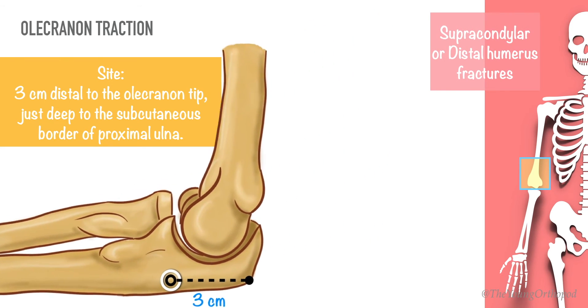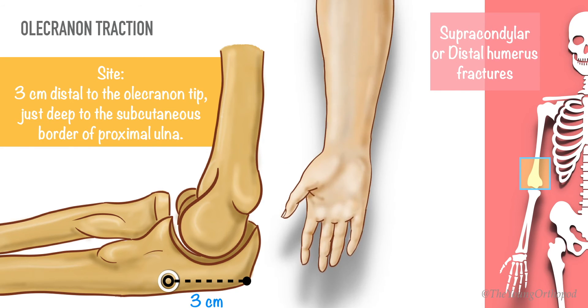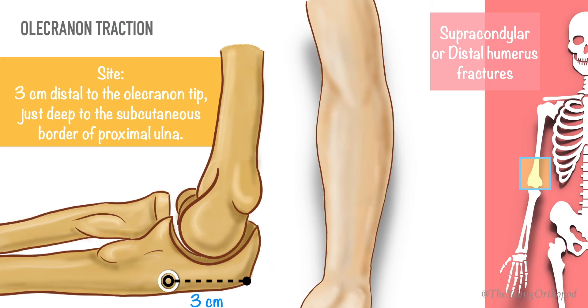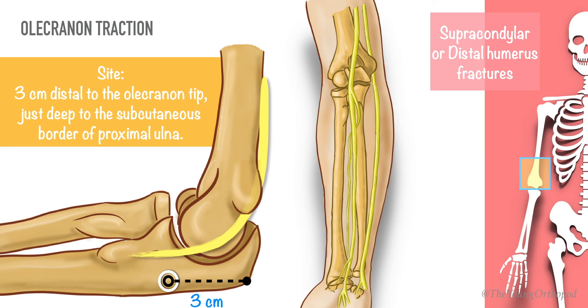Since we have better control over the entry point than the exit, the pin is inserted in a medial to lateral direction at right angles to the longitudinal axis of the ulna. This avoids injury to the ulnar nerve.